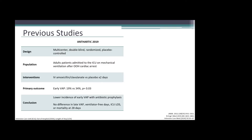The incidence of early VAP in patients who received IV amoxicillin-clavulanate was lower at 19% versus 34% in patients who received placebo, with a p-value of 0.03. However, secondary outcomes showed no difference — no difference in late VAP, ventilator-free days, length of ICU stay, or mortality.